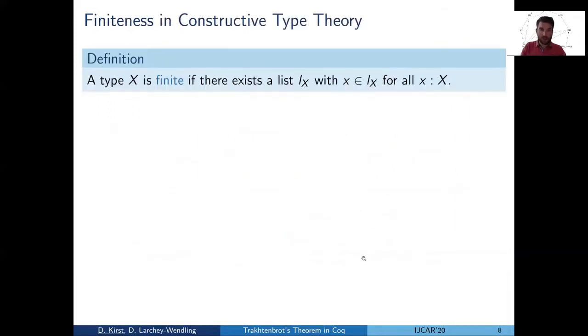Then we are concerned with finite satisfiability. So what is the notion of finiteness we use? We say that a type is finite if it can be exhausted by lists. That's probably non-standard if one comes from a classical background. But working in constructive type theory, this is a very neat compromise.